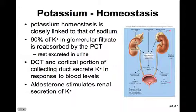Potassium homeostasis is closely linked to that of sodium. Ninety percent of the potassium in the glomerular filtrate is reabsorbed by the proximal convoluted tubule, and the rest is excreted in urine. However, the distal convoluted tubule and the cortical portion of the collecting duct secrete potassium back into the urine in response to varied blood levels of potassium. Aldosterone is involved in stimulating the secretion of potassium into the urine.